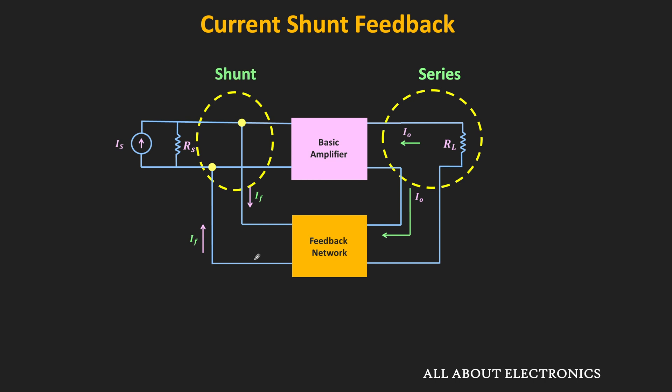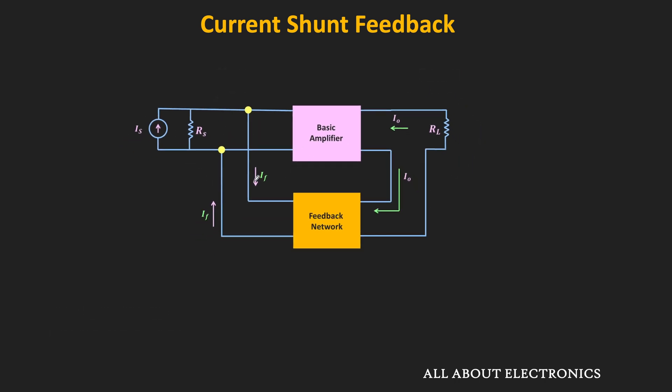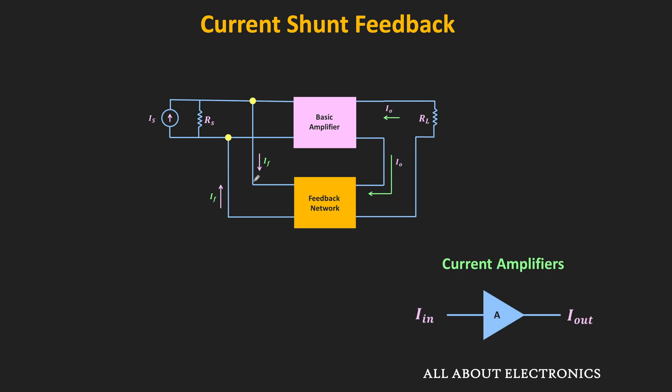Based on the connection, sometimes it is also referred to as the shunt series feedback amplifier, because on the input side we have the shunt connection while on the output side we have the series connection. Moreover, sometimes this feedback topology is also referred to as the current-current feedback amplifier, because the sampled signal is the output current, while the feedback signal which is mixed with the input signal is also a current signal. So this type of feedback topology is mainly used in current feedback amplifiers, where the input signal is the current signal and the output is also a current signal.